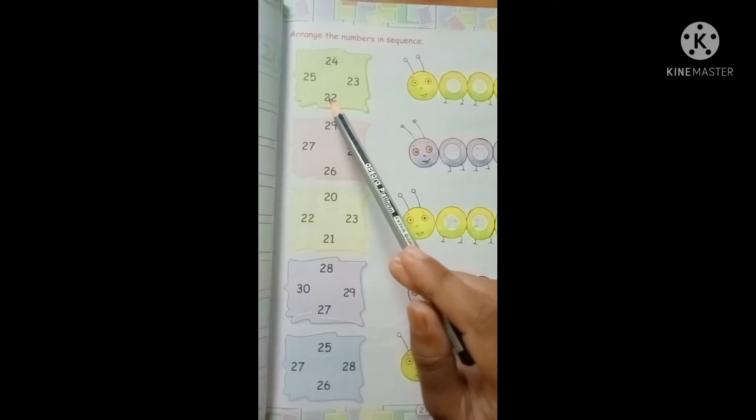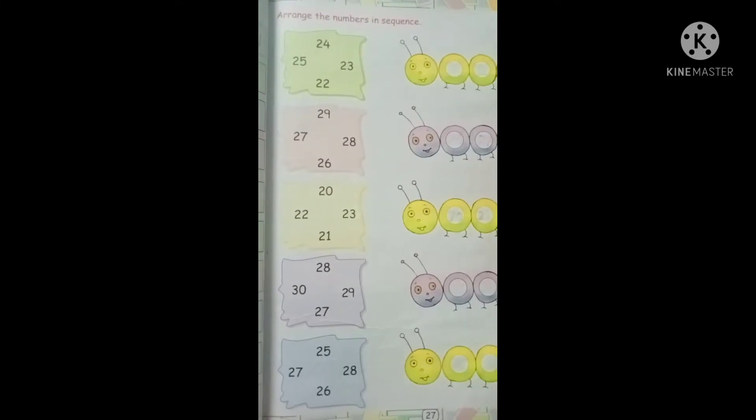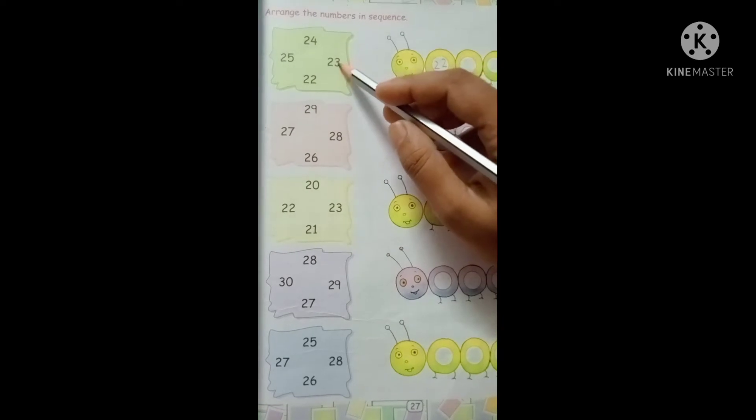First of all you write 22 number. After that 22 after comes 23, 23.